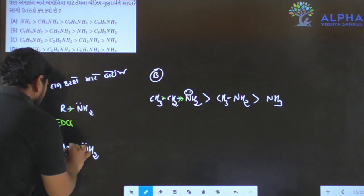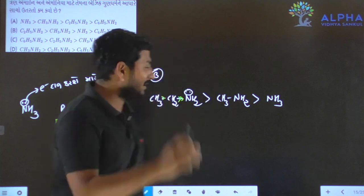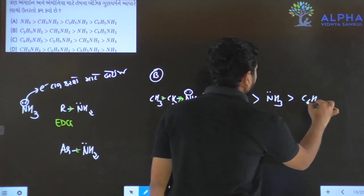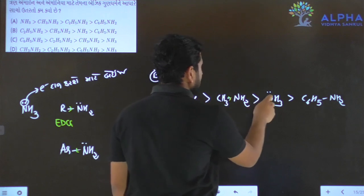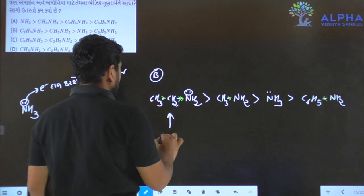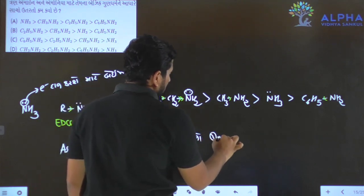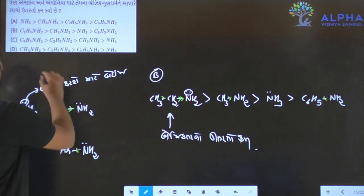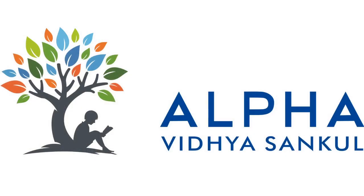Benzene — this electron is given and what we have to do, we have to add. This electron is given, so we have to add. Basically, the significance is the best, then the answer is A. So this one is A, and this is B.